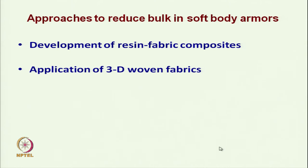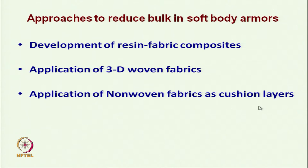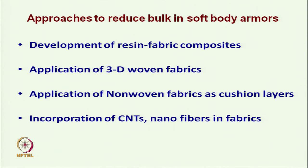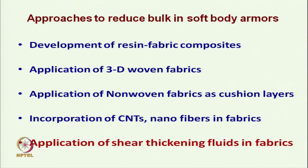There are different approaches to reduce bulk in soft body armour. The development should focus on reduction of thickness, increase in flexibility, and reduction in mass. The approaches include: development of resin fabric composites, 3-dimensional woven fabric, use of non-woven fabric as a cushion layer, incorporation of carbon nanotube or nanofibre in the fabrics, and application of shear thickening fluid (STF) in fabric.